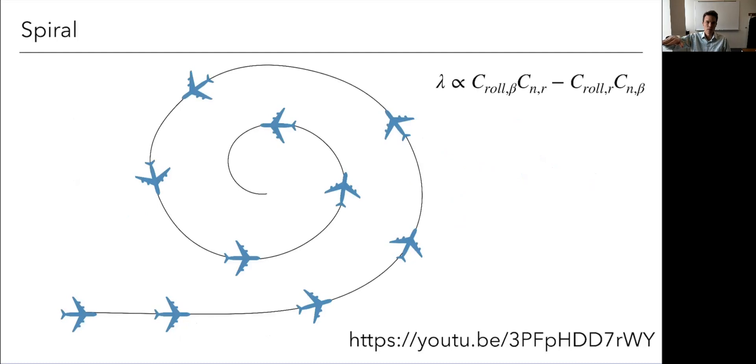So you start getting into this turn and a turn is going to have you, because you've turned, you've tilted your lift vector a little bit. That's what causes the turn. That means also that your lift is dropping a bit. So you maybe start dropping or your lift is reduced relative to the weight. So you might start descending a little bit.